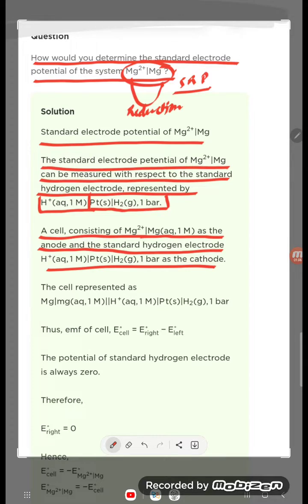The cell representation will be: Mg|Mg²⁺(aq, 1 M)||H⁺(aq, 1 M)|Pt|H₂(g), 1 bar. This is the cell representation.